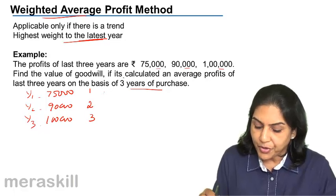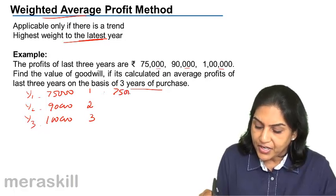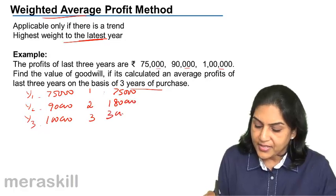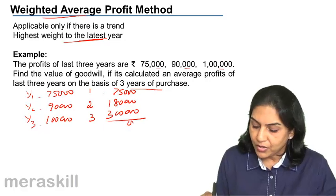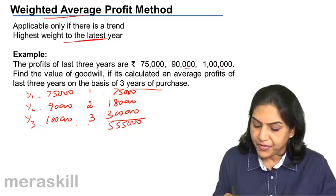As a result, what is the product we get? We get 75,000, 1,80,000, and 3 lakh. What is the total? Total of the product is 5,55,000 and this is 6.